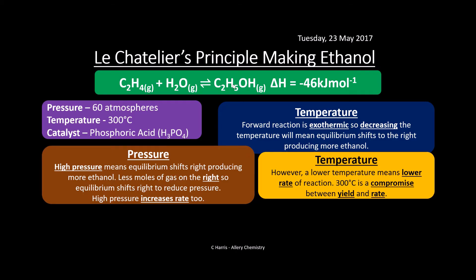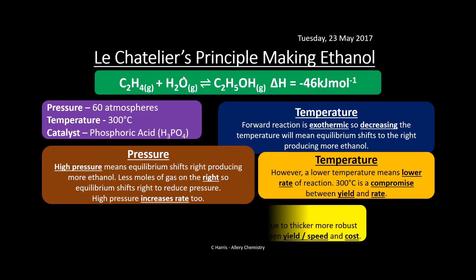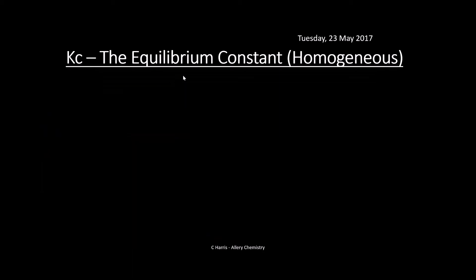High pressure shifts equilibrium to the right producing more ethanol because there's only one mole of gas on the right versus two on the left, and high pressure also increases the rate. However, high pressure environments are really expensive — you need thick containers and equipment to withstand it. So the compromise balances yield, speed, and cost, because ethanol isn't the most expensive chemical and production must be economically viable.